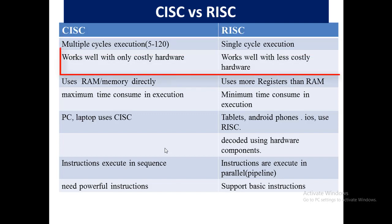CISC requires powerful hardware, as these instructions are very powerful. It only works well with costly and powerful, most advanced technology hardware. While on the other hand, RISC can work with any type of hardware easily — it never requires only costly hardware and can work with any type of hardware.